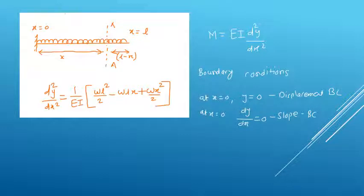The origin is at the fixed end and the governing differential equation is M = EI × d²y/dx², which is the well-known beam equation. The boundary conditions are: at x = 0, y = 0 (displacement boundary condition), and at x = 0, dy/dx = 0 (slope boundary condition).